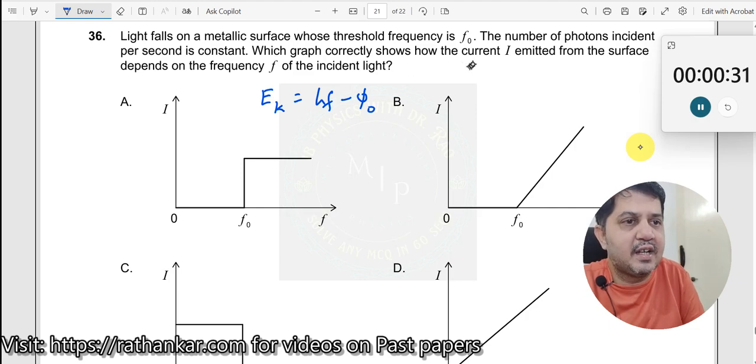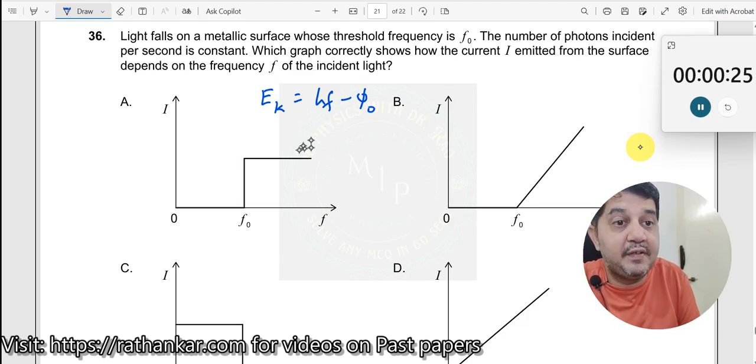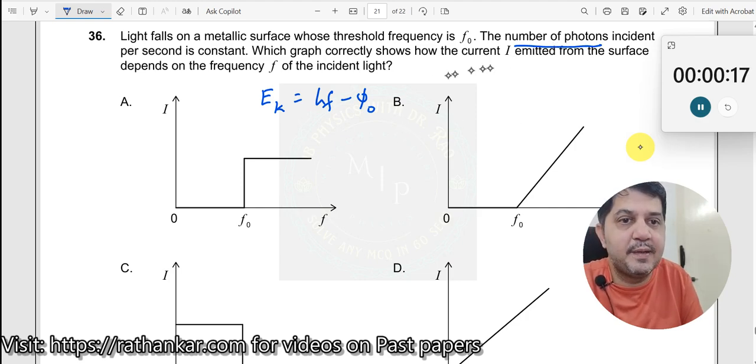Which graph shows how the current I emitted, number of photons incident per second. Now, this is the frequency. This is not frequency. This is the intensity. Which graph shows how the current I emitted from the surface depends on the frequency F of the incident light. Which graph is correct over here.